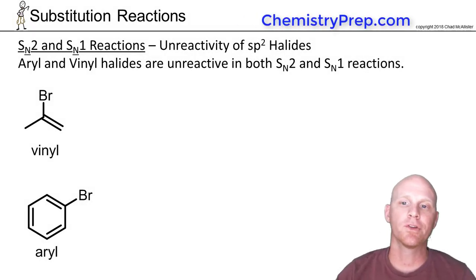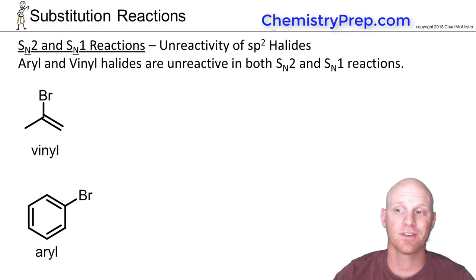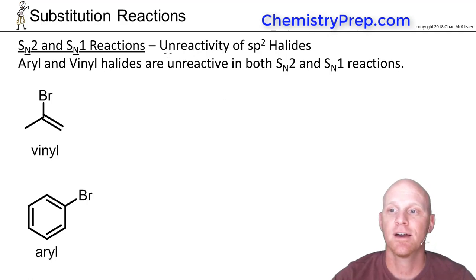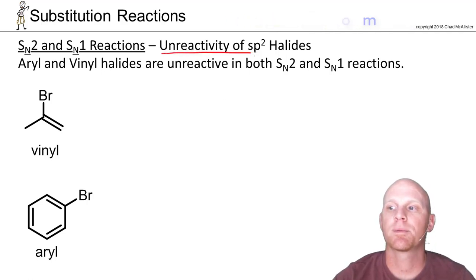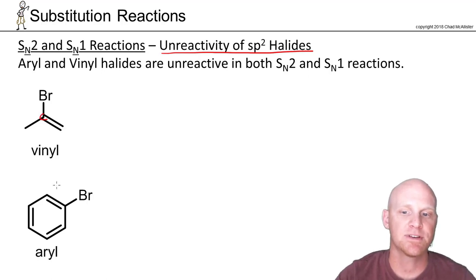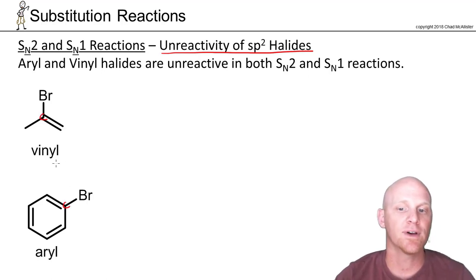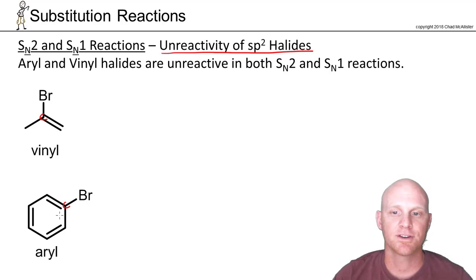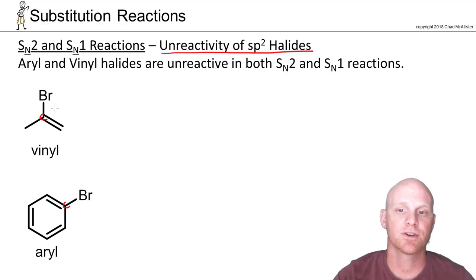I want to make one little note here that involves both SN1 and SN2 reactions, and that is the unreactivity of what I'm going to term SP2 halides. When your halogen is attached to an SP2 carbon, as in both the vinyl and aryl or aromatic halide shown below.